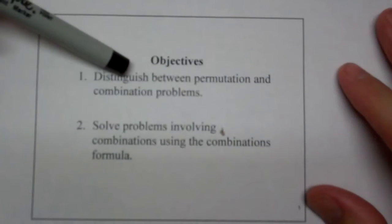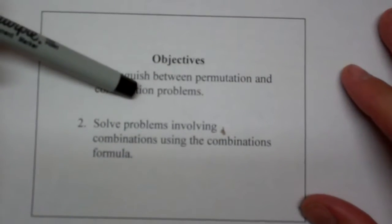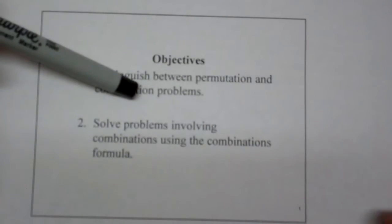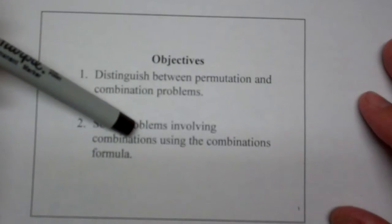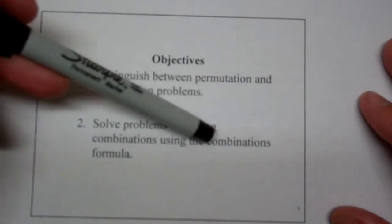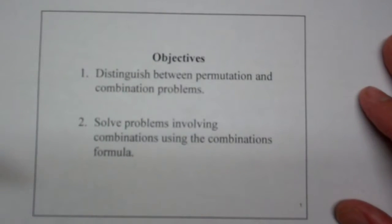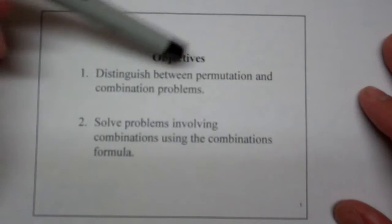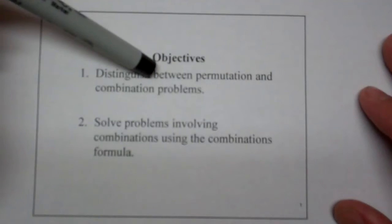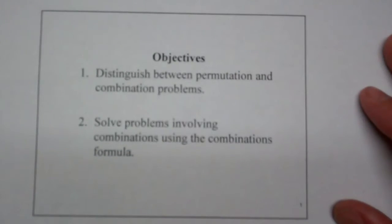There are a couple of specific cases and a word that we'll look for. Then we want to solve problems involving combinations using the combination formula. So the first thing is, how are we going to distinguish between a permutation and a combination? What's the difference?